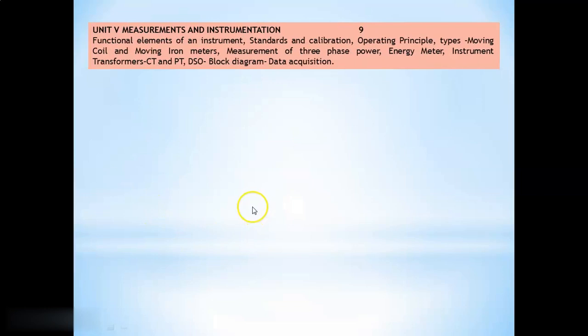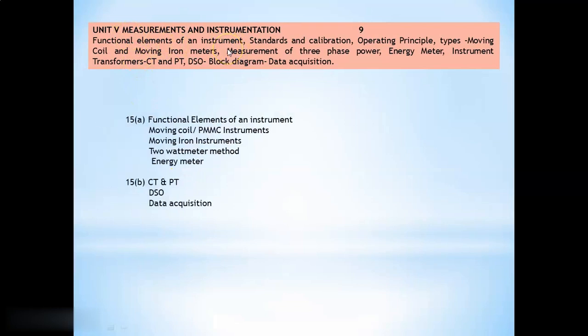If you take 15A or B, that is from fifth unit measurement and instrumentation. Here, 15A questions are functional elements of an instrument, moving coil or PMMC instrument, permanent magnet moving coil and moving iron instrument, two wattmeter method, energy meter. And if you take 15B, CT, PT, current transformer, potential transformer, DSO digital storage oscilloscope, data acquisition. These are all block diagram oriented approach. Students should draw its block diagram and should explain its description, that is block diagram description, related advantages, disadvantages, and applications.